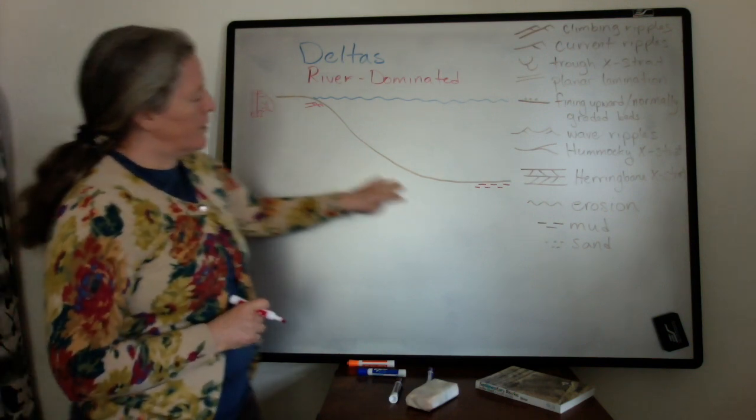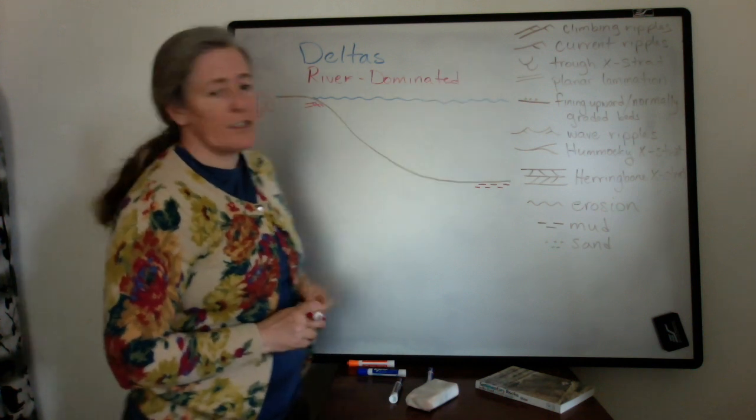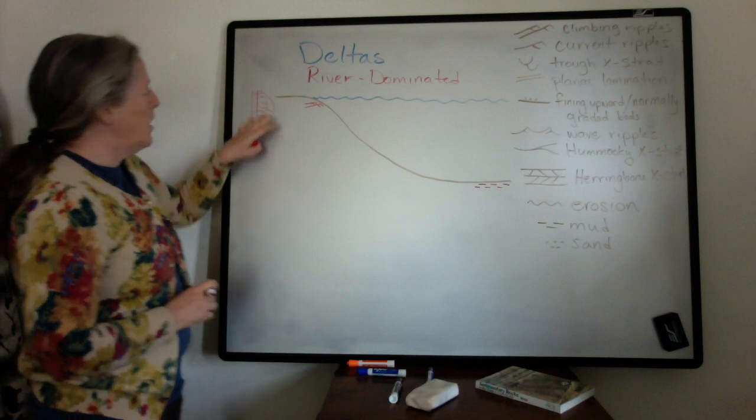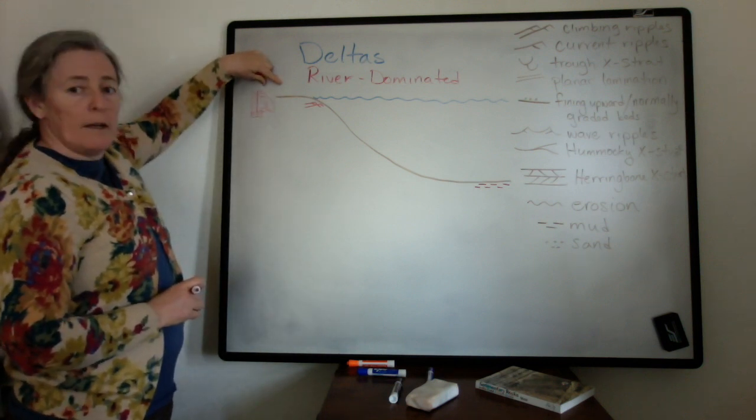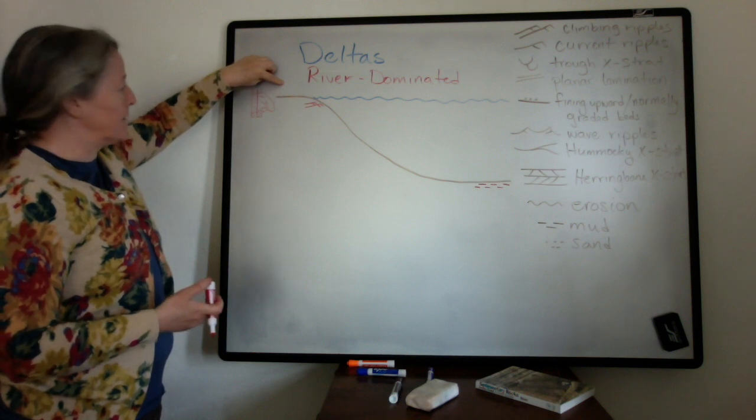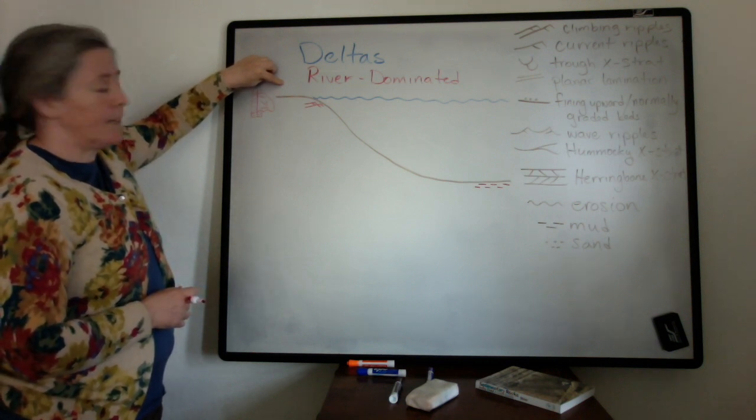I started with a profile and a bunch of sedimentary structures that we're going to be talking about. On the delta plain, the facies are mostly the fluvial facies and particularly meandering river facies.